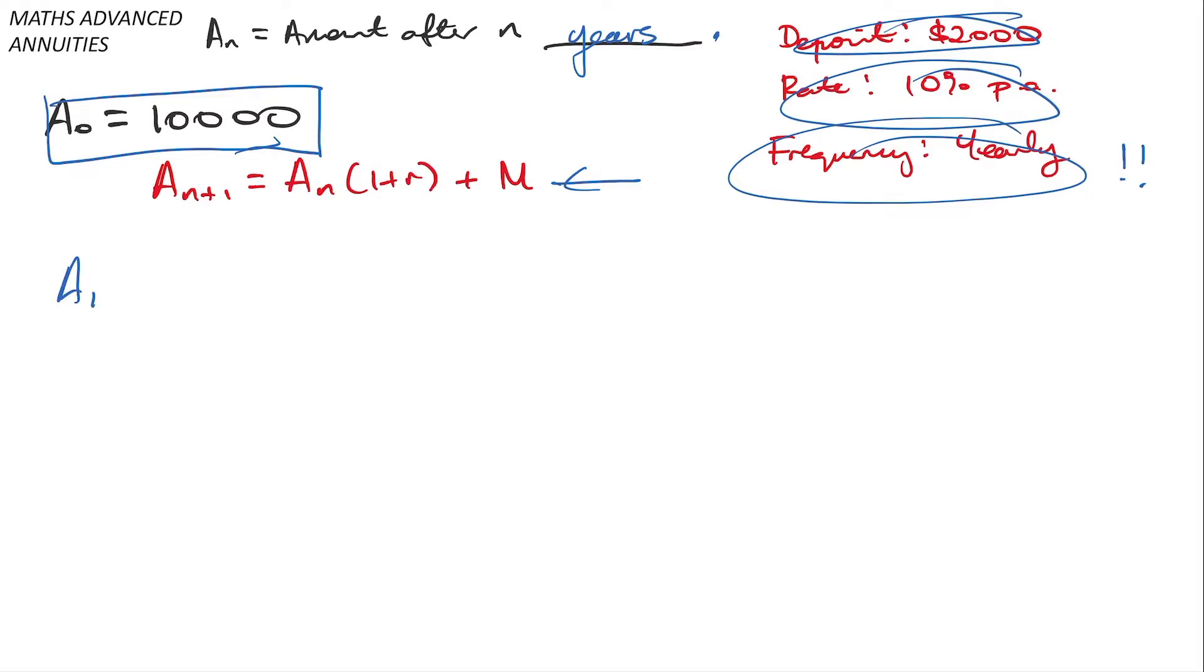At the end of the first year, my opening balance will be invested at a rate of 10% per annum, so that's times 1.1. And then I'll add my deposit value on the end. And then if I sub in my expression for A_0, I will get 10,000 times 1.1 plus 2,000.